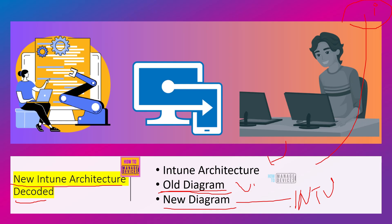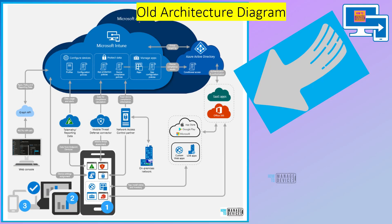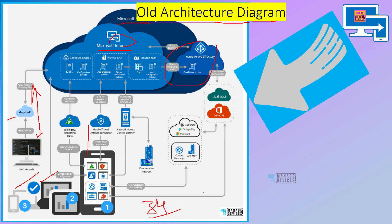This is the old architecture diagram which Microsoft shared. You can see Microsoft Azure is there, Intune and Azure AD is there, and then it has different connections. One is the Intune admin portal connecting via Graph API, and the devices are getting connected through the Intune core services into Intune. This is a very high-level architecture diagram that Microsoft shared three or four years before.